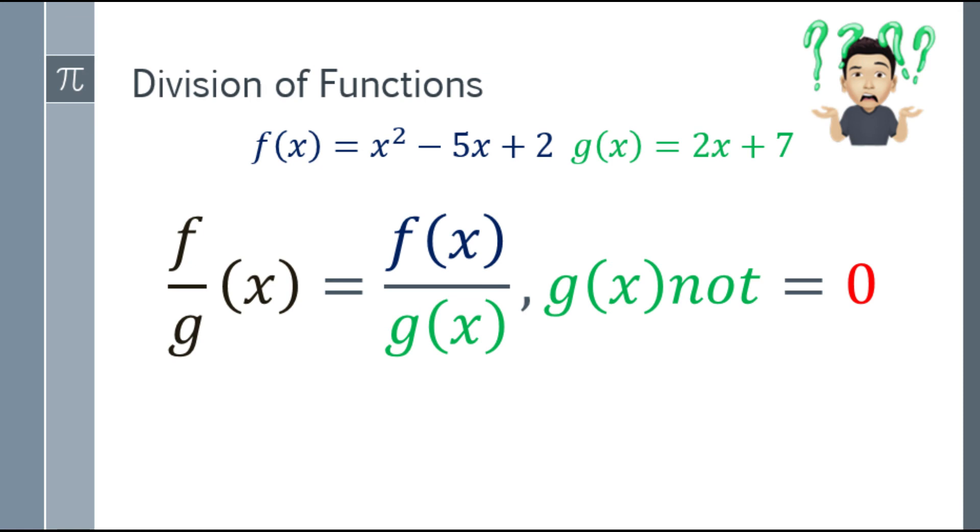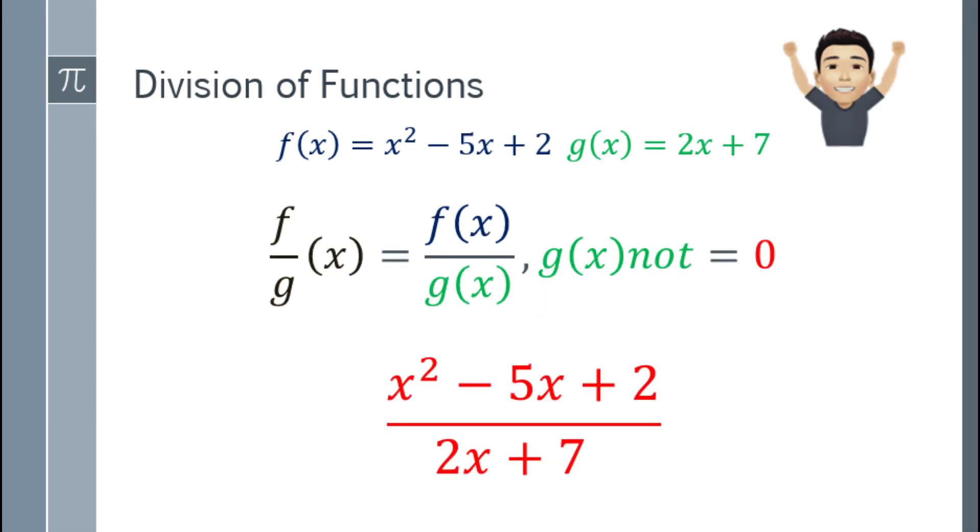And lastly, division of functions. So dito naman, magdivide ka lang. You can see f over g of x, basta yung g(x) is not equal to 0, kasi undefined yun. Ilagay lang natin yung given. That will be the quantity (x² - 5x + 2) over the quantity (2x + 7). And that is already the final answer kasi hindi mo na siya masasimplify pa. Kahit i-factor mo yung sa taas o yung sa baba, that's already the final answer.